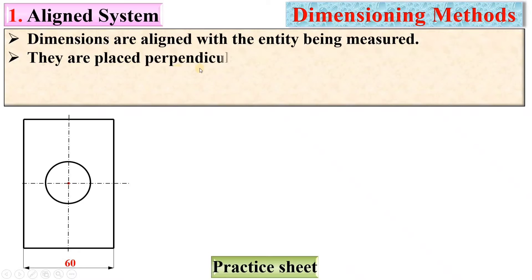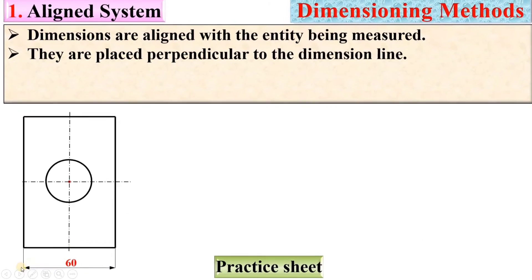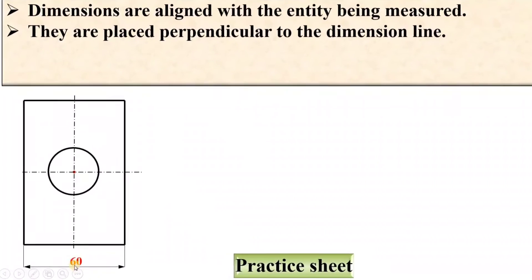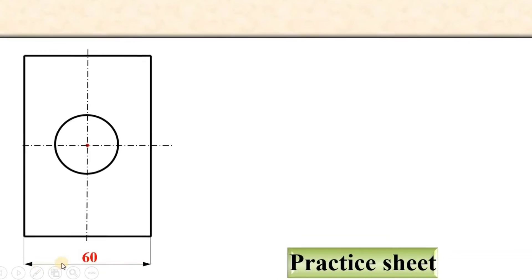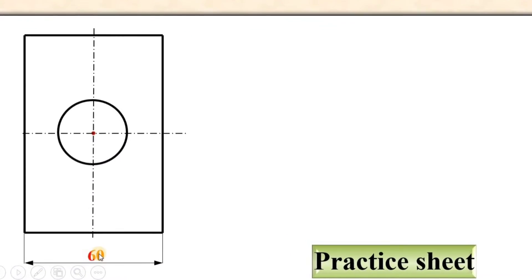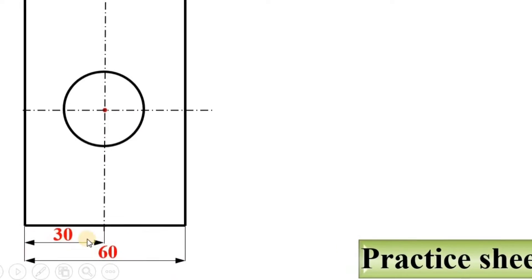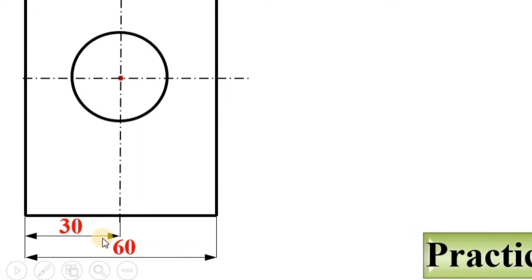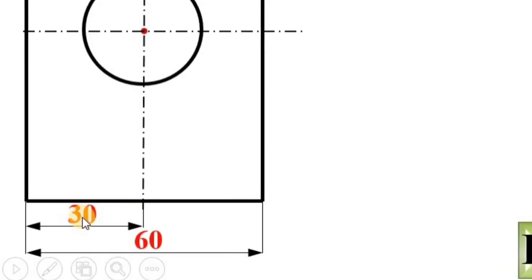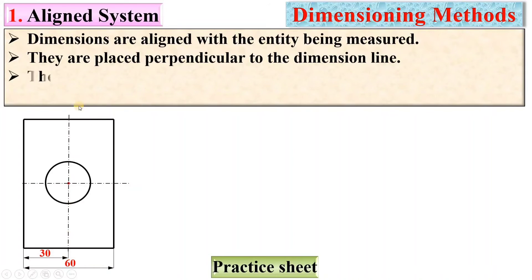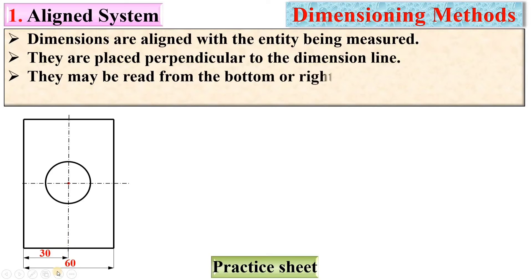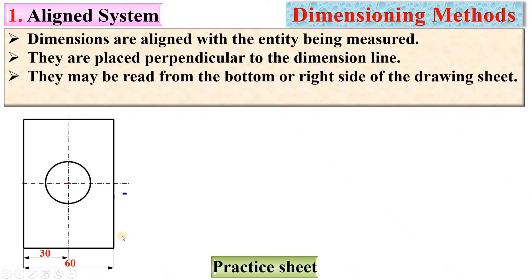Dimensions are placed perpendicular to the dimension line. Here you can see this is the dimension line, and the dimension must be perpendicular to it. There is also an extension line. They may be read from the bottom or the right side of the drawing sheet, depending on the orientation.